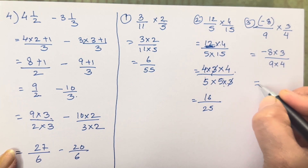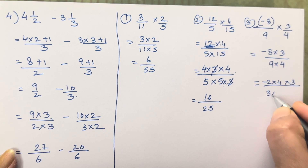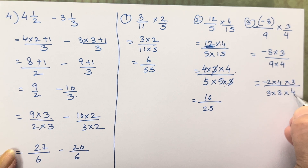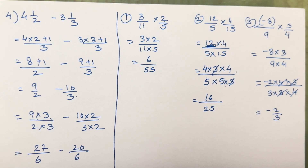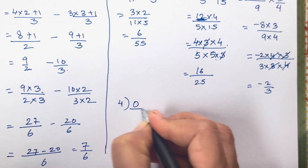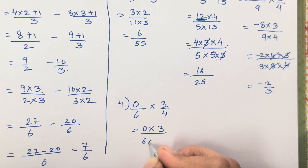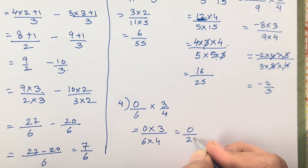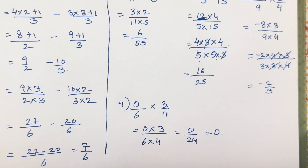For the third multiplication sum: −8 × 3 over 9 × 4. The 4s cancel and the 3s cancel, leaving minus 2 upon 3. For the fourth sum: 0 × 6 over 3 × 4 = 0 upon 24. Anything multiplied by 0 is 0.